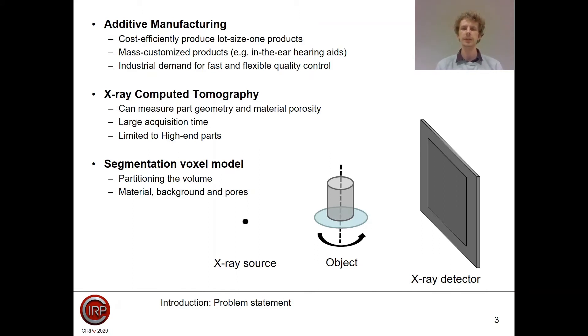Additive manufacturing is increasingly being used to produce end-use functional parts. The main reasons are the enormous design freedom that we can obtain with additive manufacturing and the fact that you can cost-efficiently produce lot size one products. It is therefore very useful to produce mass-customized products where each part is specifically adapted to each customer, like for example, in hearing aids. But one of the main challenges is that each part is unique, and it is therefore very difficult to use statistical quality control methods to perform quality control of a complete batch based on a few samples.